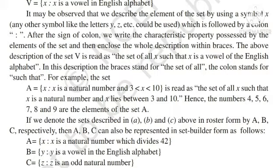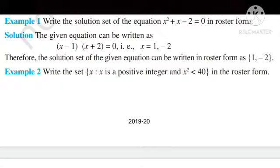यहाँ पर set किसे कहते हैं यह सिखा, set को दो तरह किस तरह represent करते हैं यह भी सिख लिया, set का element सिख लिया। अब examples देखते हैं। Example 1: x² + x − 2 = 0 — यह एक quadratic equation है। Solve करने पर answer आता है x = 1 or x = −2। Therefore, the solution set in roster form is {1, −2}।